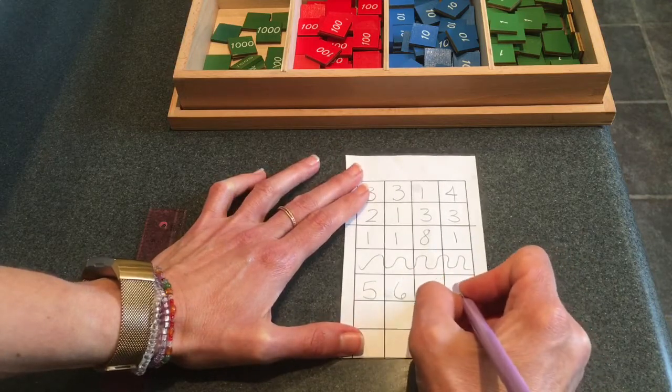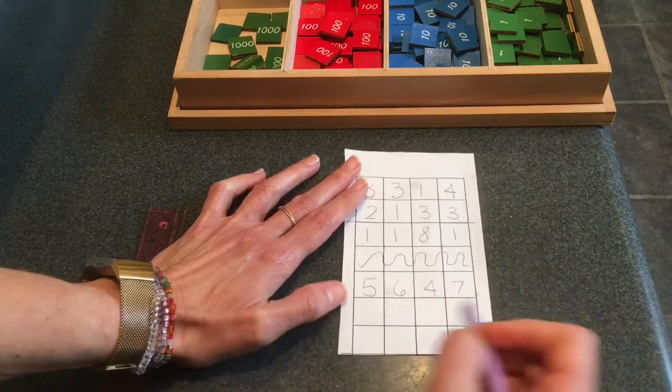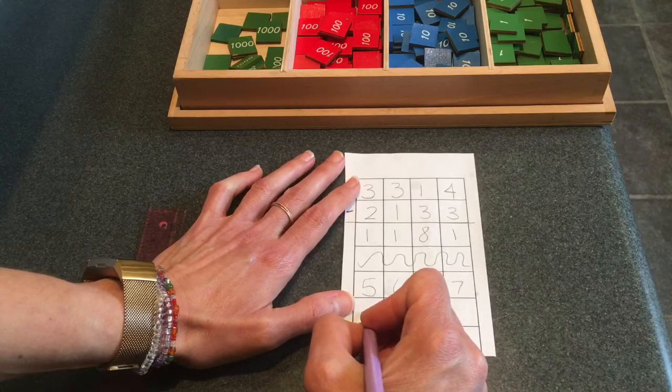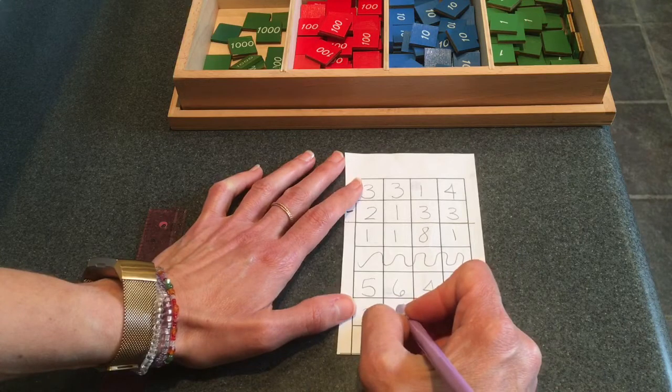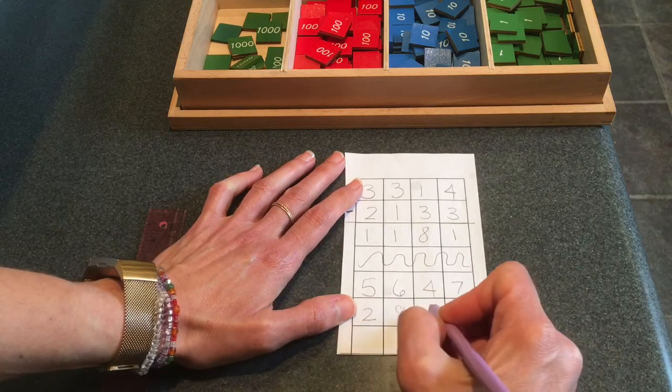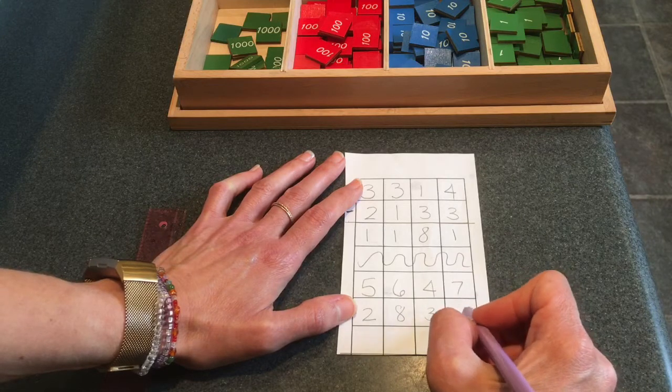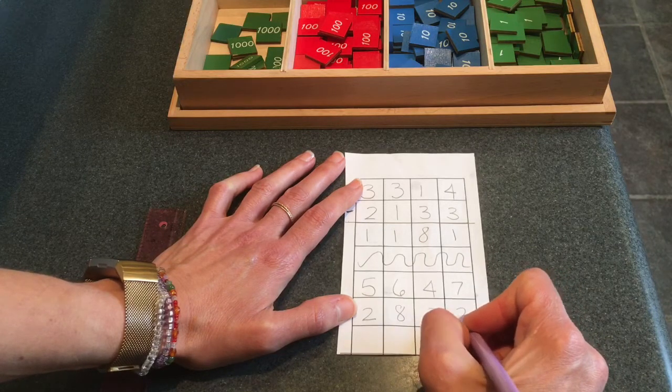And I'll write five thousand, six hundred, four tens, and seven units minus two thousand, eight hundred, three tens, and two units.